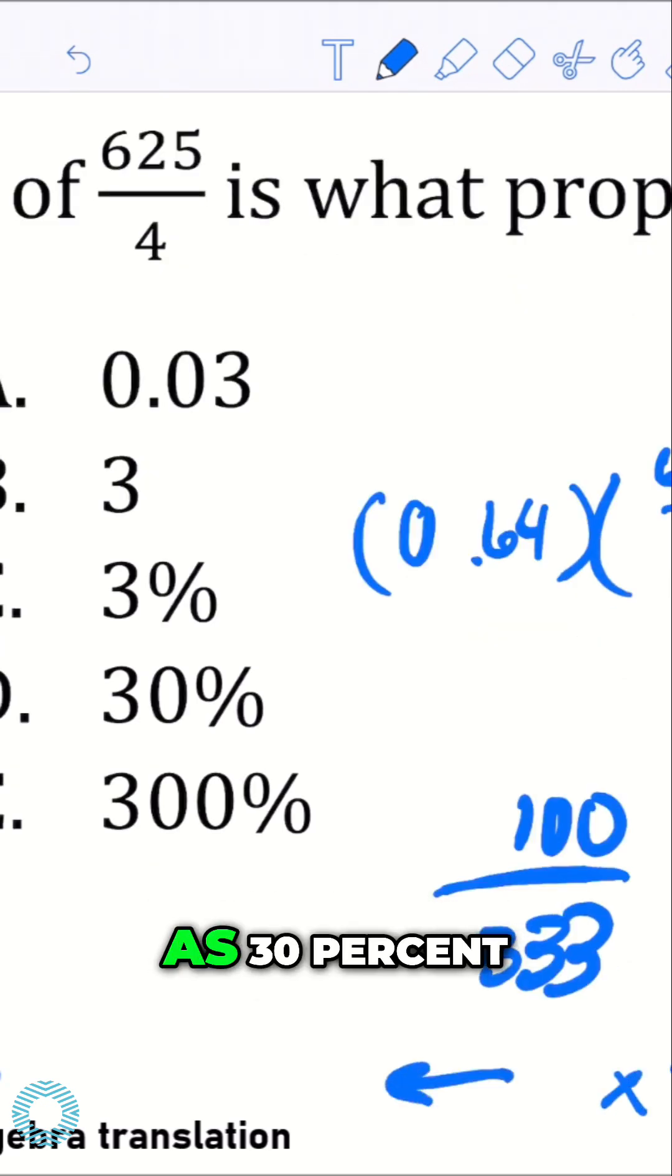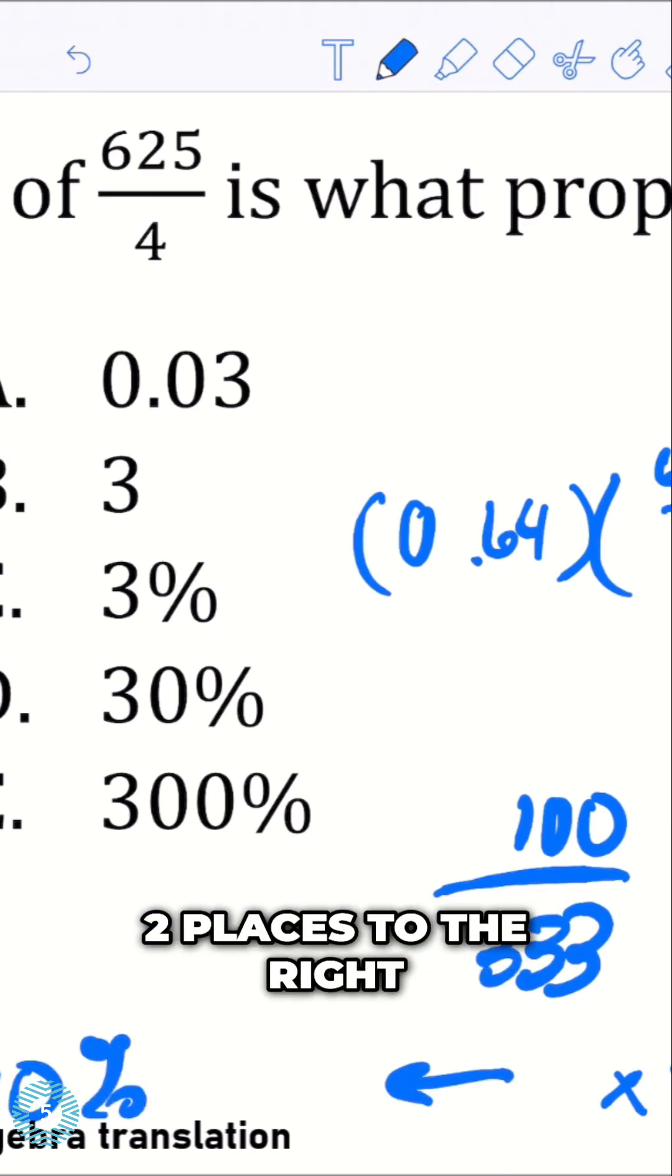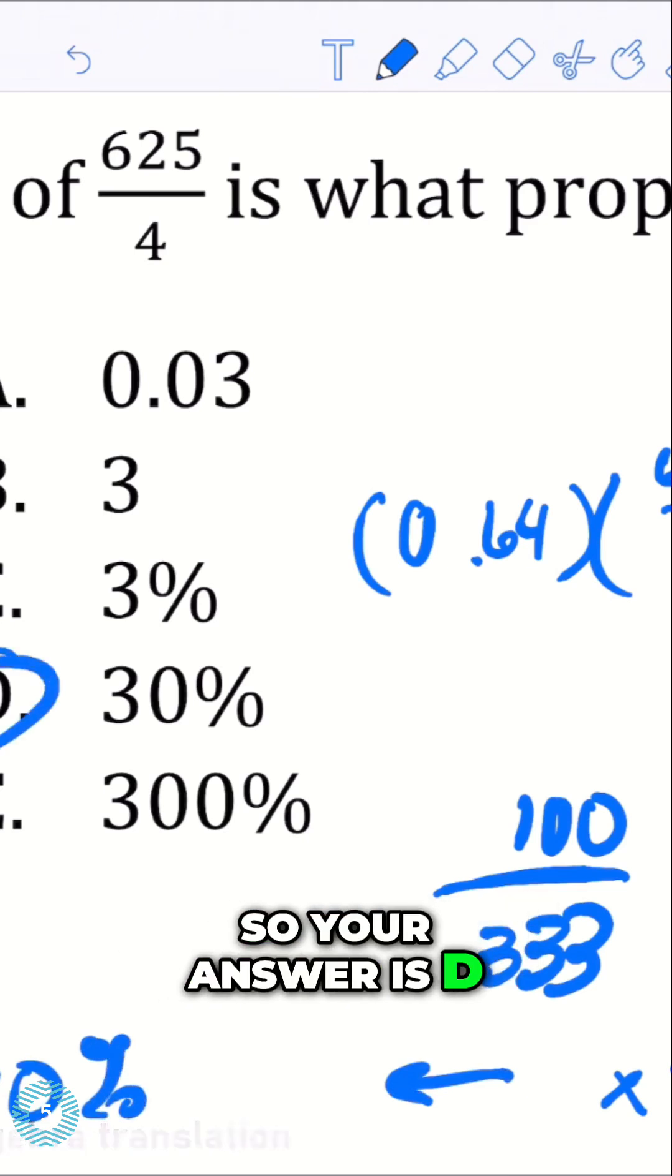Which is the same as 30%, because I just moved the decimal one, two places to the right, that's 30%, so your answer is D.